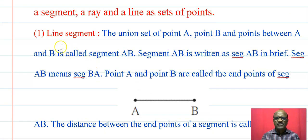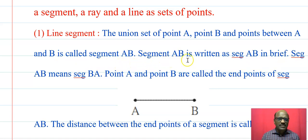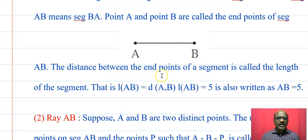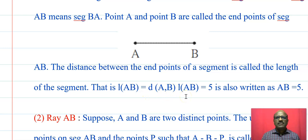Now some basic definitions. The first is a line segment. The union set of point A and point B and the points between A and B is called segment AB, written as seg AB. Point A and point B are called the end points of segment AB. The distance between the end points is called the length of the segment. That is, length AB = distance AB. If length AB is 5, it is written as AB = 5.